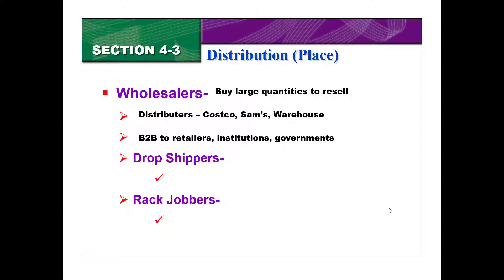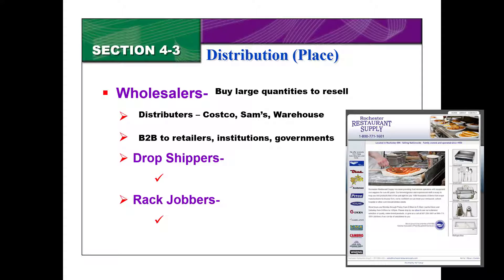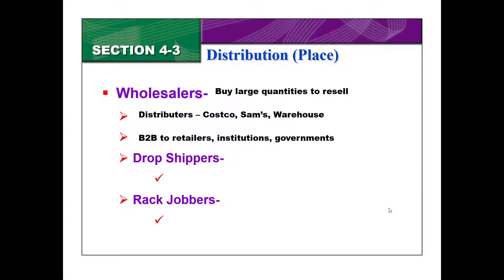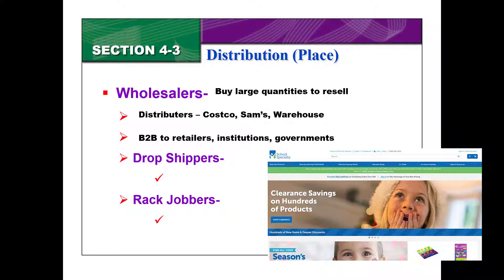These could also be a wholesaler that sells directly only business to business. For example, there's a restaurant supply company in Rochester where they buy large quantities of, let's say, ranch that they then go and sell to Five West, a restaurant that will use it. You can also have wholesalers that sell directly to institutions — for example, at school we have a wholesaler called School Specialty, who buys tons of highlighters and sells them to schools. Or you can have government wholesalers.